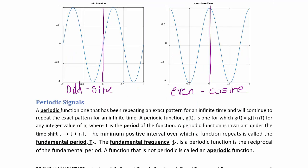Periodic signals. A periodic function is one that has been repeating an exact pattern for an infinite time and will continue to repeat that exact pattern for an infinite time. A periodic function g(t) is one for which g(t) equals g(t + nT) for any integer value of n, where capital T is the period of the function. A periodic function is invariant under the time shift t to t + nT. The minimum positive interval over which a function repeats is called the fundamental period t₀. The fundamental frequency f₀ is the reciprocal of the fundamental period. A function that is not periodic is said to be an aperiodic function.